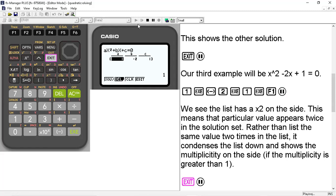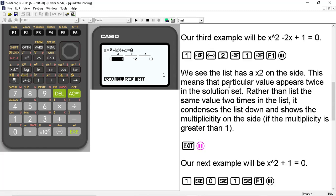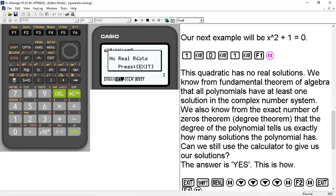So let's go back to our coefficient screen. Our next example is going to be x² + 1 = 0. So we'll go ahead and hit 1 and then exe, 0 for the coefficient of x, and then 1 again for the constant term. And if I hit F1 to solve, it gives me a screen that says no real roots. Press exit.